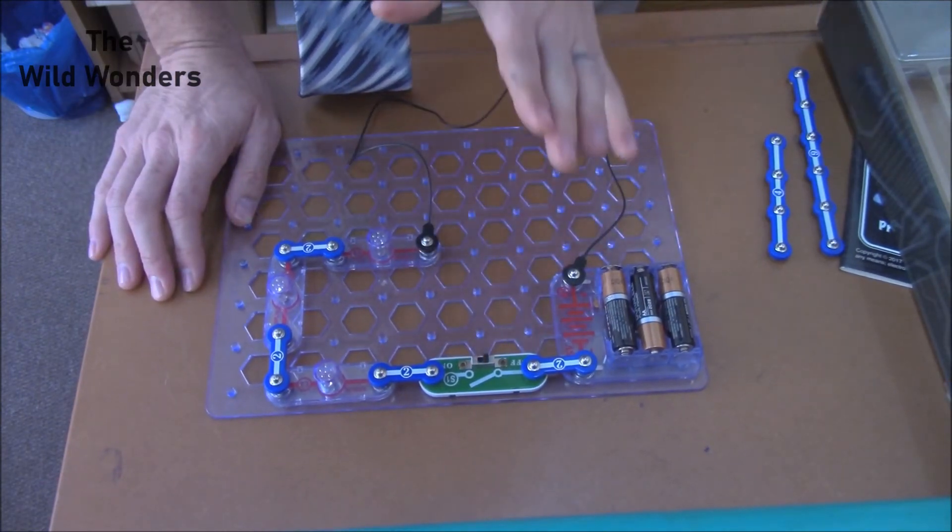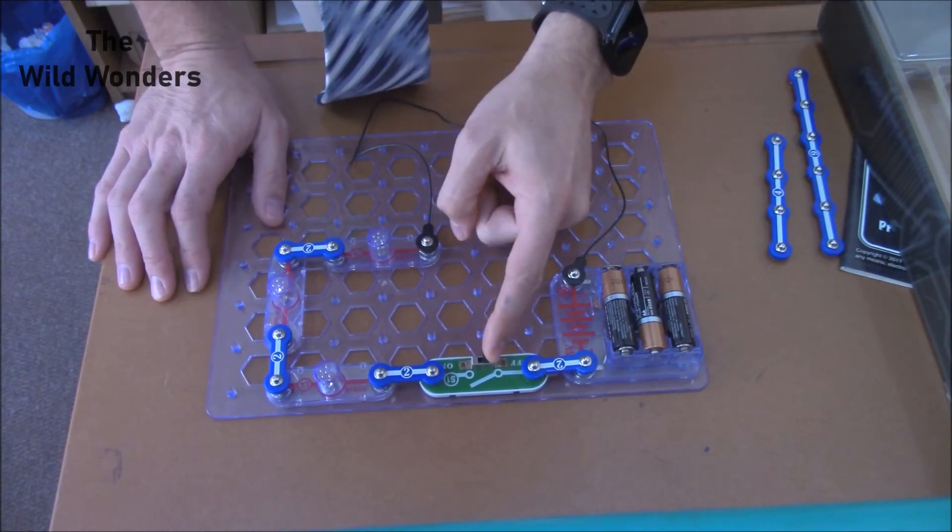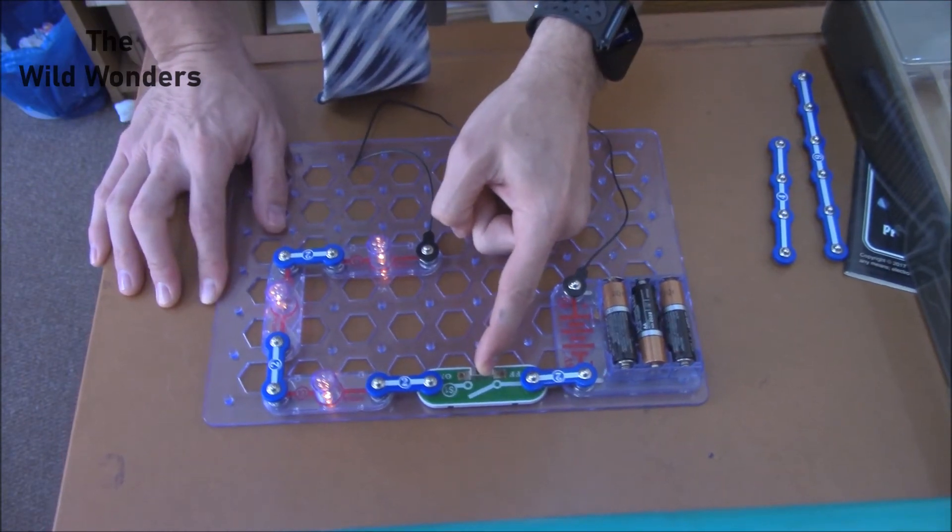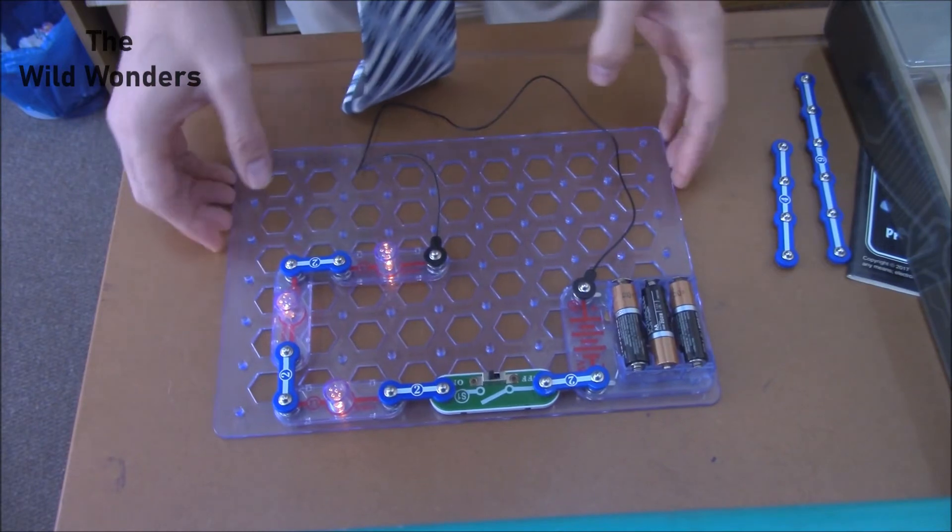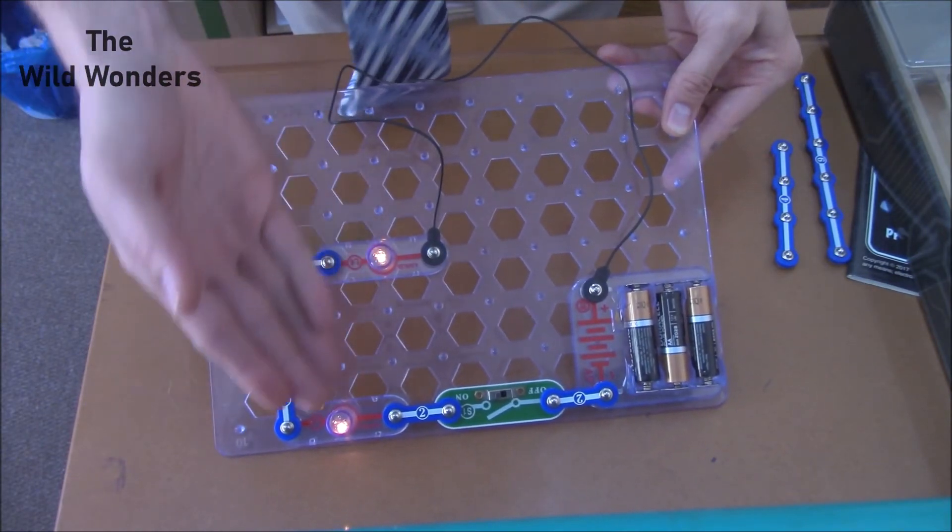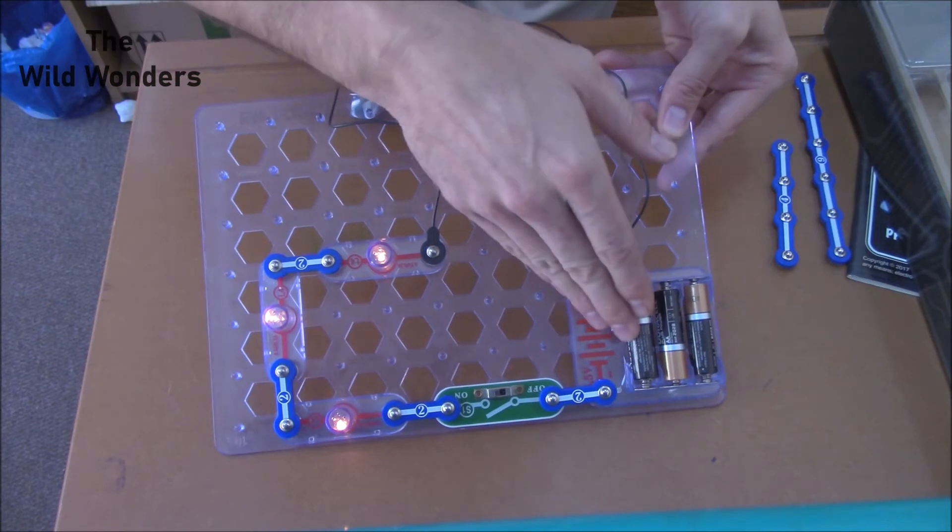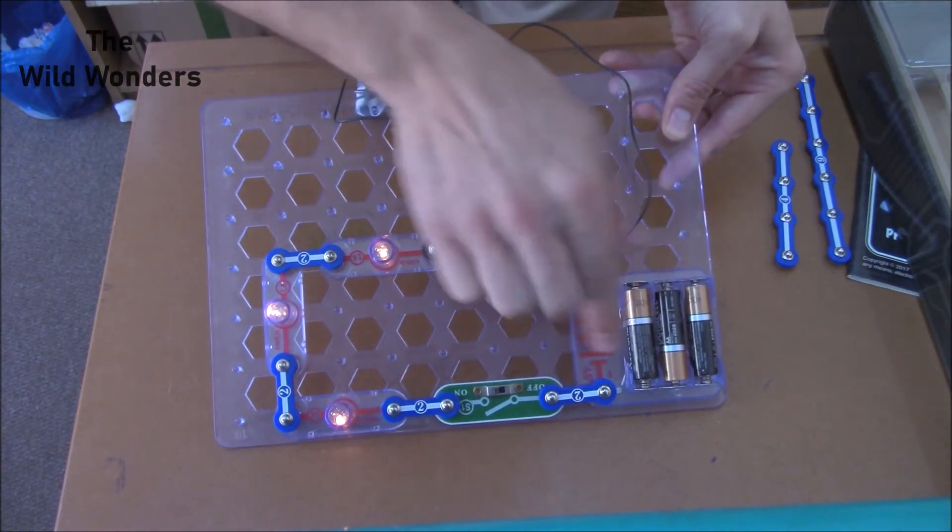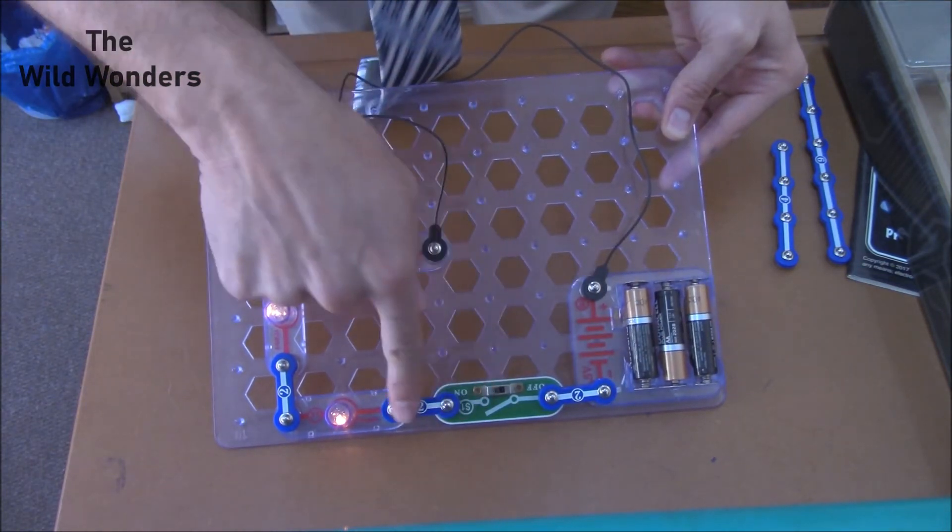But as you can see, the button is not turned on yet. So in order to open our circuit, we switch it on. And there you can see all the lights are working in series.